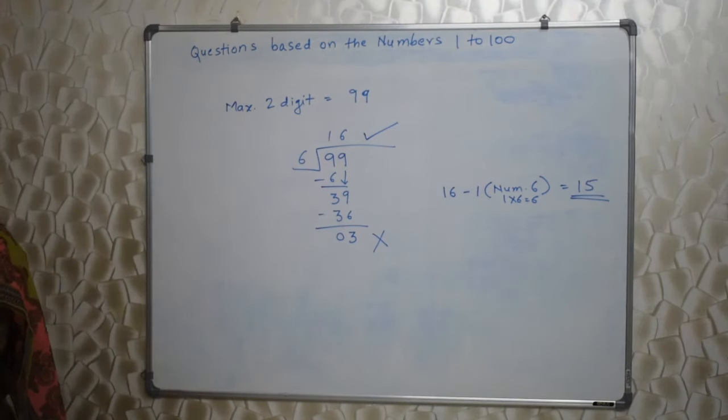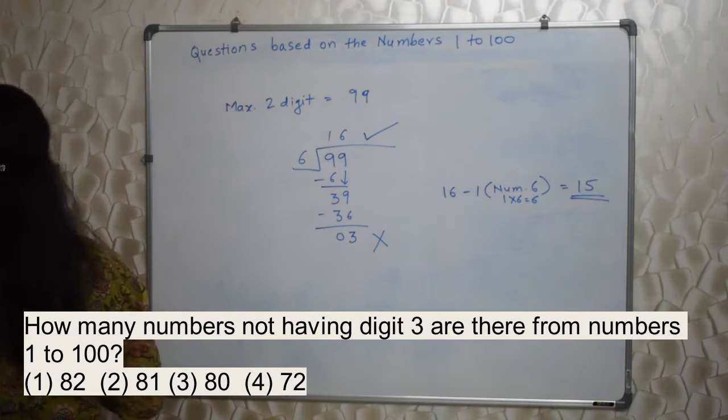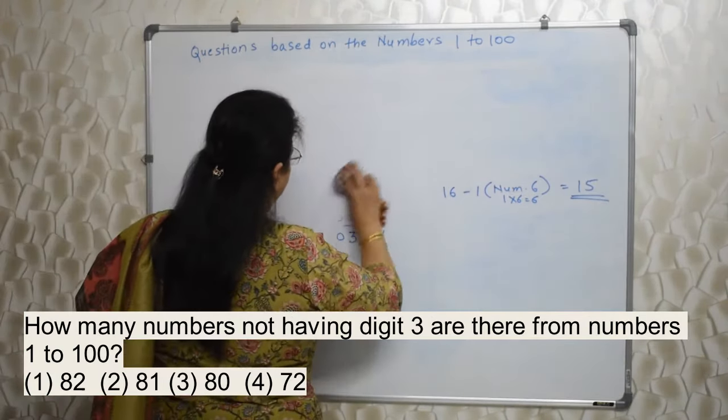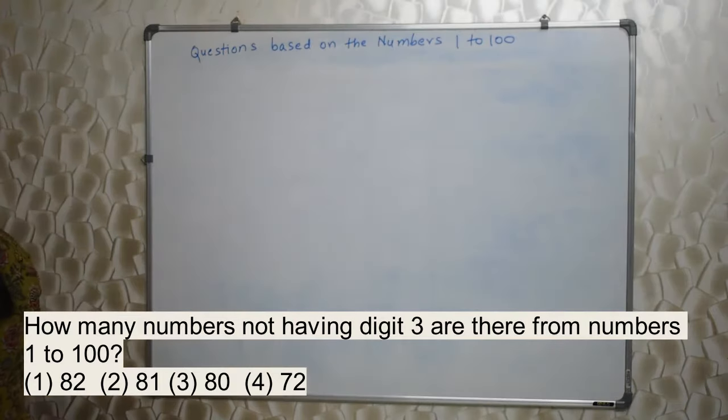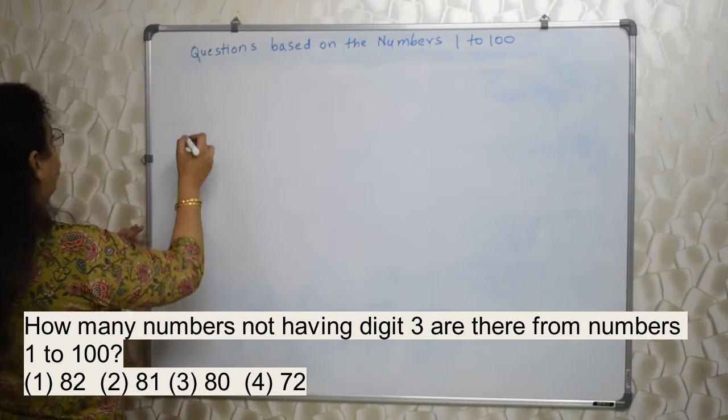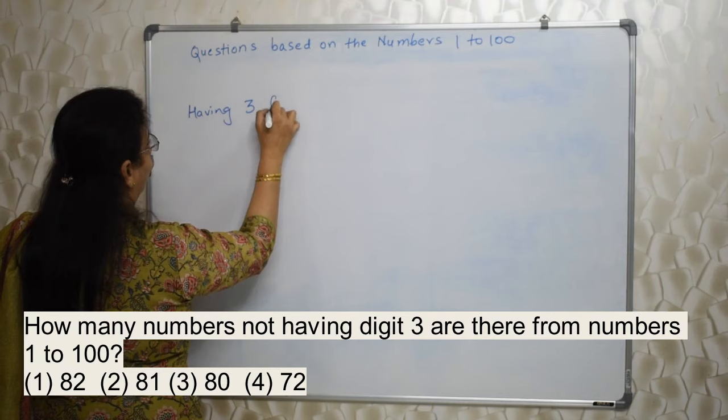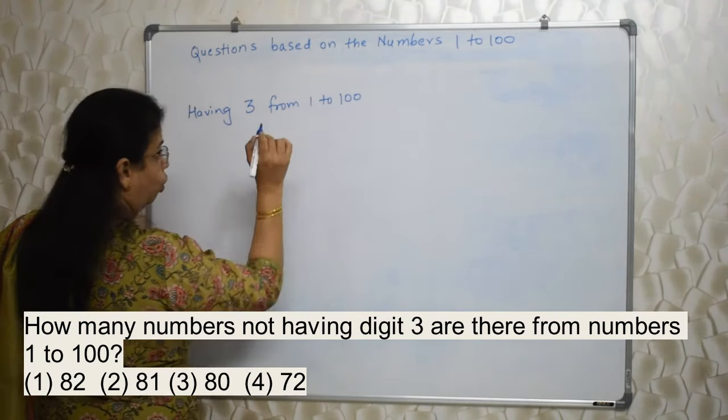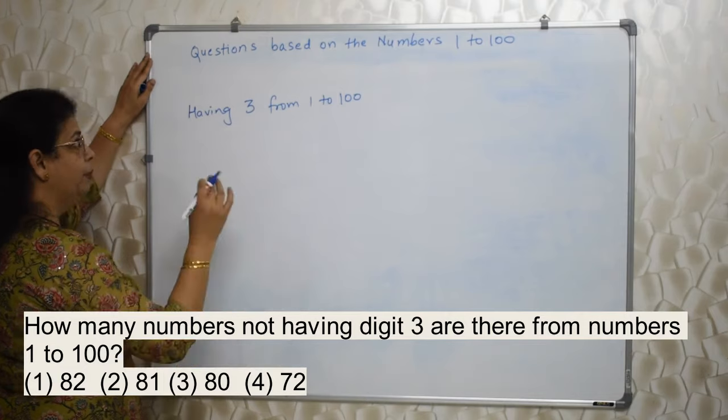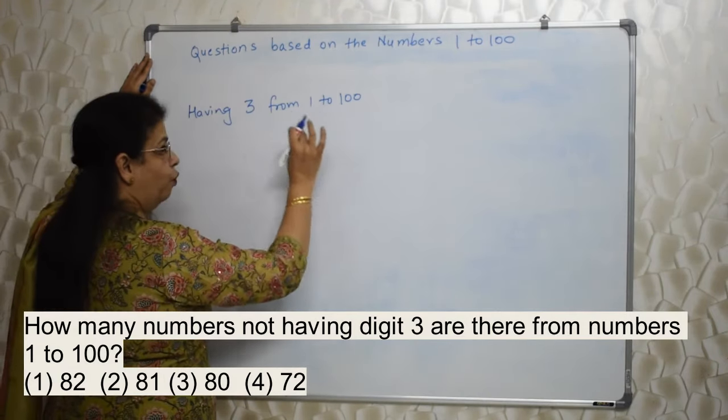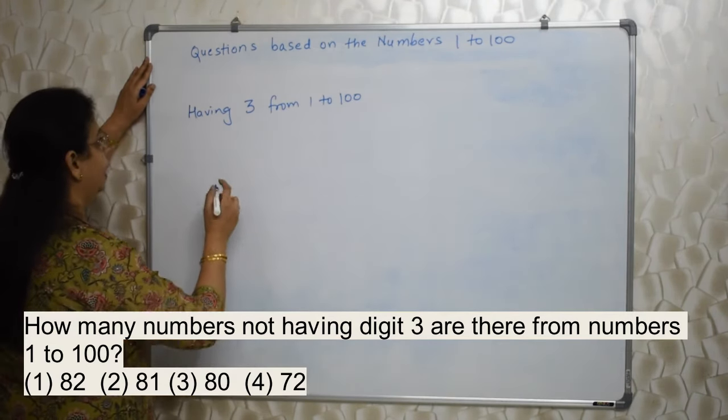Next one: How many numbers not having digit 3 are there from numbers 1 to 100? I have told you, whenever they ask you any number not having, you first need to find out having. Having 3 from 1 to 100. You should know, I told you, but here we will calculate. You revise this, practice this, then immediately you will know. Having 3 from 1 to 100, how many numbers are there? It is very well given in the book in the form of a table. Please see that.